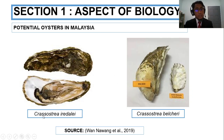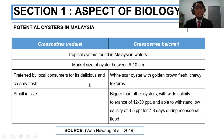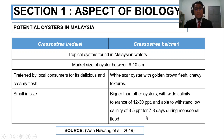The potential oyster species in Malaysia — I highlight two species: Crassostrea iredalei and Crassostrea belcheri. Both are tropical oysters found in Malaysian waters and the market size is between 9 to 10 cm. Crassostrea iredalei is preferable to local consumers due to its delicious and creamy flesh, though it is small in size. Crassostrea belcheri is a white-scar oyster with golden brown, chewy flesh, bigger than other oysters, and can tolerate wide salinity ranges, including low salinity during the monsoon season.